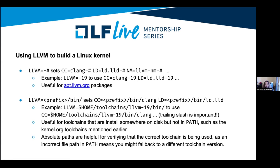Using absolute paths is helpful for verifying you're actually using the correct toolchain. If you add a folder to PATH but get the variable value wrong — say you added the prefix rather than the bin folder — you might fall back to a different version of Clang than intended. That can cause problems, mainly that your Kconfig values might not be set correctly.